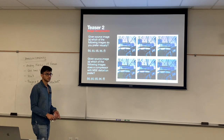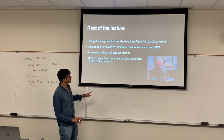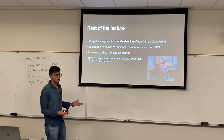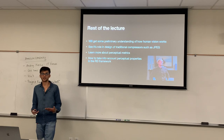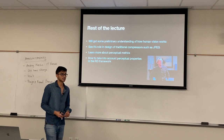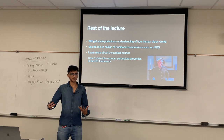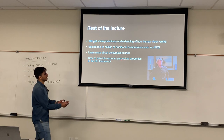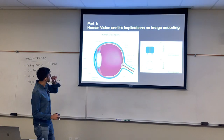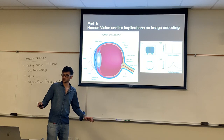So the goals for today's class are: get a preliminary understanding of how human vision works; see its role in the design of traditional compressors such as JPEG, covering design decisions we left for today; learn more about perceptual metrics — can you come up with a quantitative space to optimize over the human A-versus-B comparison; and finally, see how we can account for these perceptual properties in the rate-distortion framework. For now, we'll focus on image and human vision.